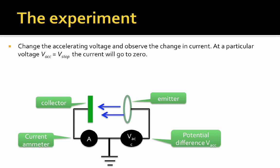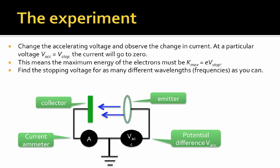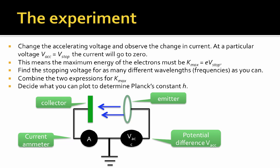What you will do is change the accelerating voltage VAC and see what happens to the change to the current. At some particular voltage, you're going to find that the current goes to zero. In other words, you have provided enough energy to stop the electrons. So we call this potential VAC equals V stop. Therefore, we've discovered that the maximum energy of the electrons must be Kmax equals E charge of the electron times V stop. So what you should do in this experiment is find the stopping voltage for as many different wavelengths or frequencies as you can. You have about five or six to work with. And then mathematically combine the two expressions you have for Kmax and figure out a way to plot your stopping voltages to determine Planck's constant. So you're going to want to make a graph, make a plot, where Planck's constant is the slope of that plot.